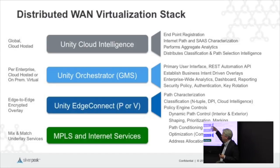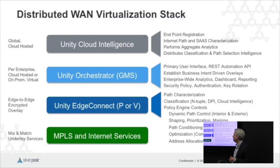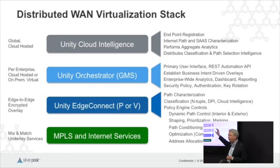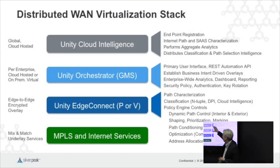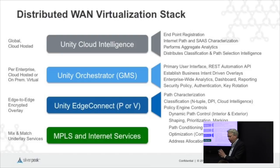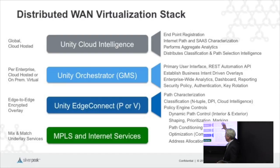The next level up is what we call the Unity Orchestrator, also known as our GMS or Global Management System. This is per enterprise and can be cloud-hosted or running on the customer's premises as a virtual appliance. Above that is what we call Unity Cloud Intelligence, which is our Silver Peak cloud portal, used to enable a number of different services.